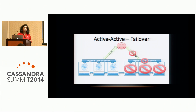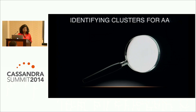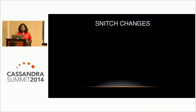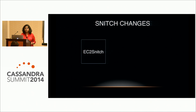Now the process from Cassandra's perspective. The first step is identifying all clusters that need to be extended. We maintain 90-plus clusters, and not every application needs active-active — logging or batching applications don't need it. You have to work with application owners to identify which data needs to be replicated. This seems simple but takes many cycles. In Amazon, if you have an island cluster you would be using EC2 Snitch, which uses private IPs for communication between zones.